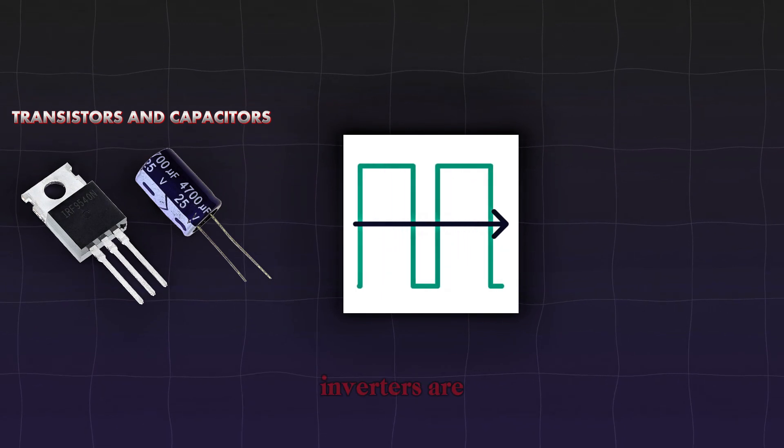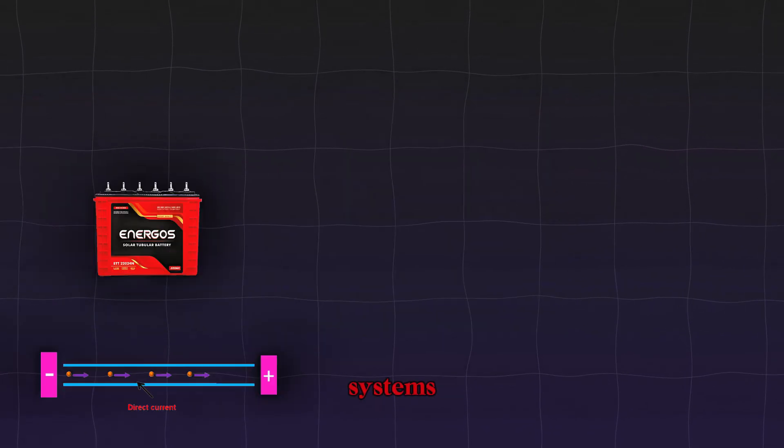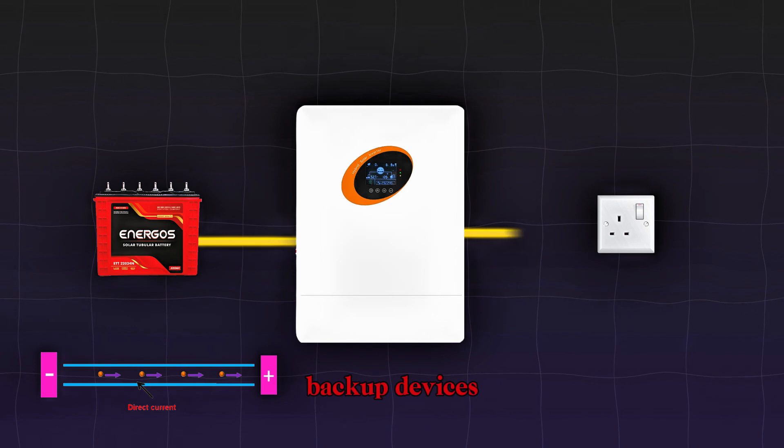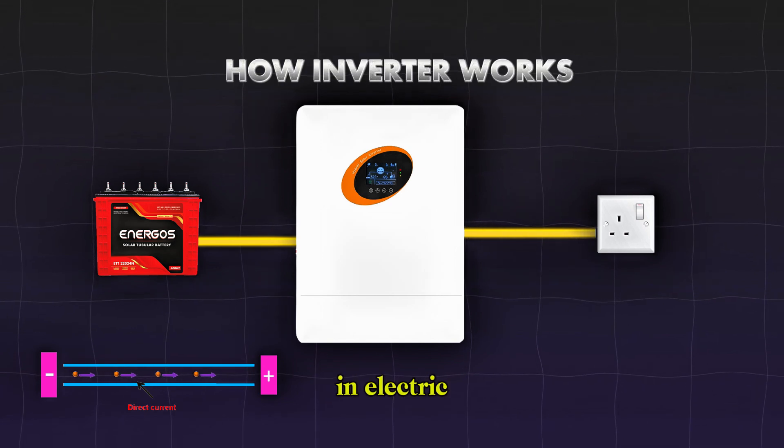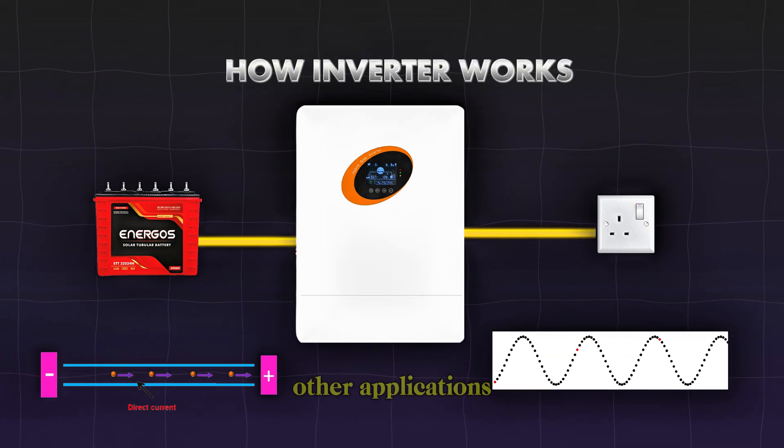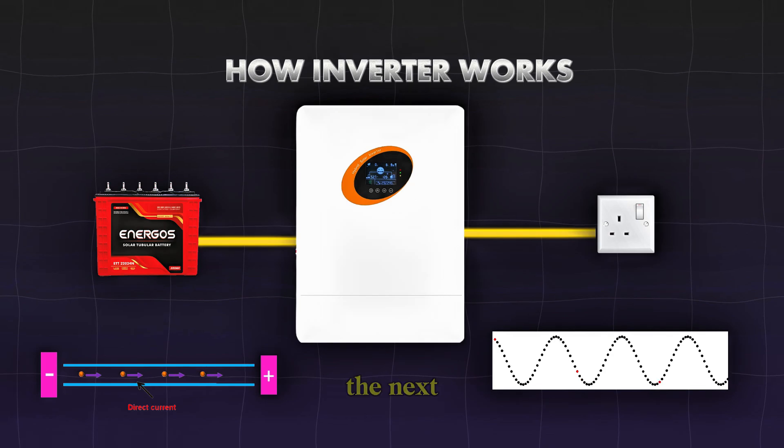So for example, inverters are used in solar power systems, as power backup devices during outages, in electric vehicles, and in various other applications.